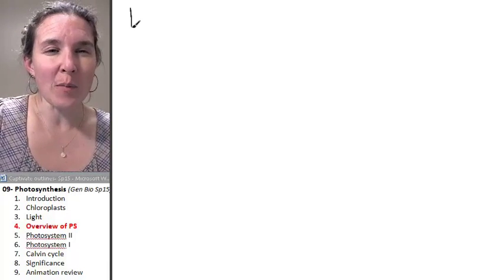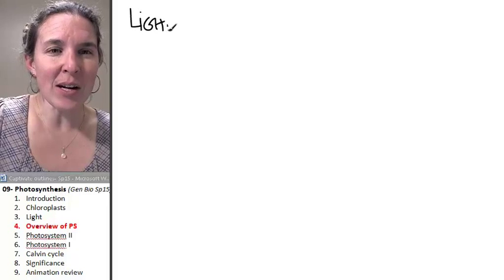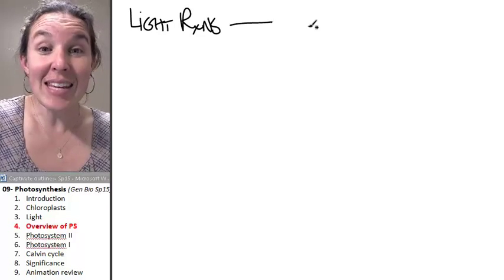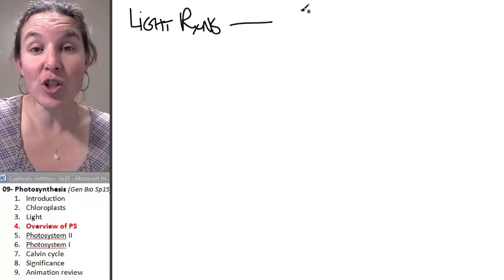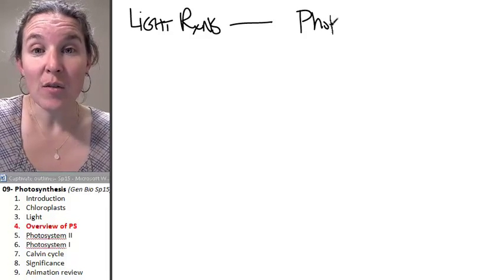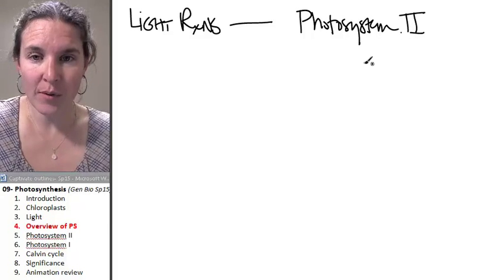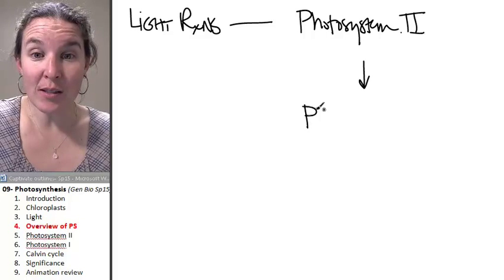First of all, you have what are known as the light reactions. And these include the photosystems. You have two photosystems: Photosystem II, of course, and Photosystem I.